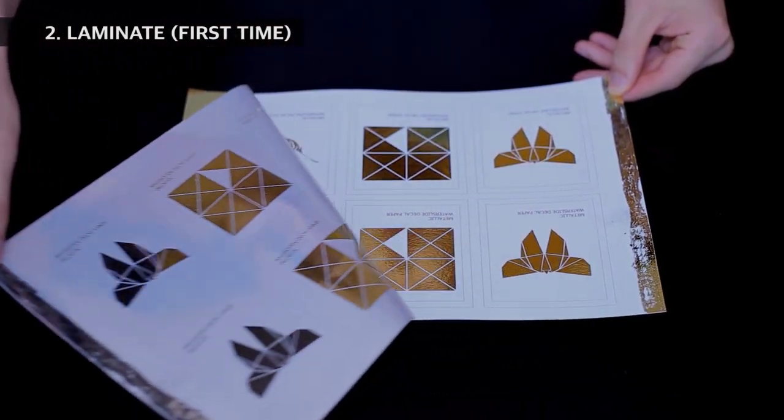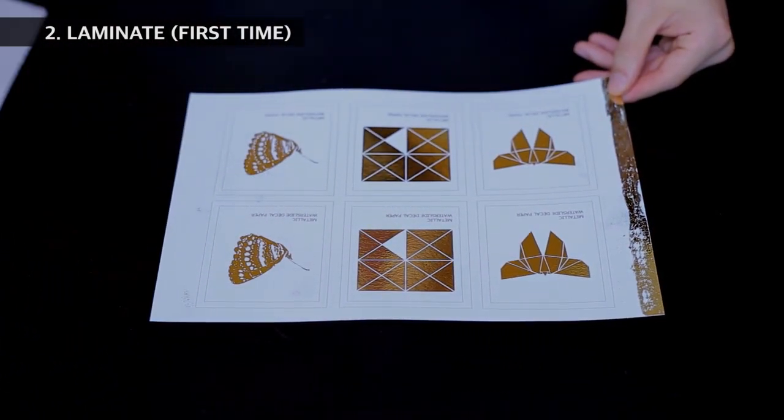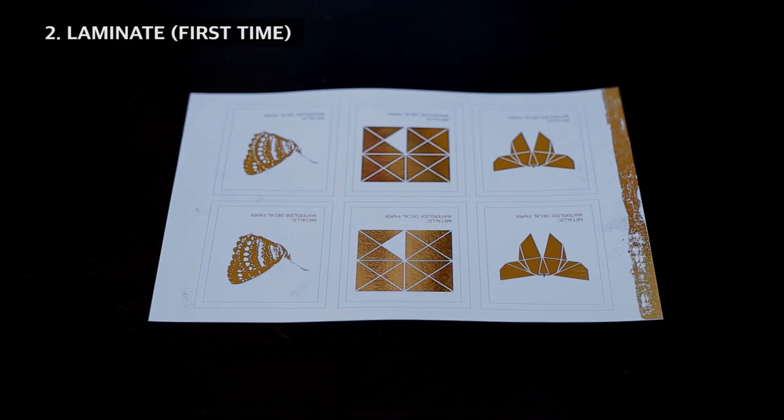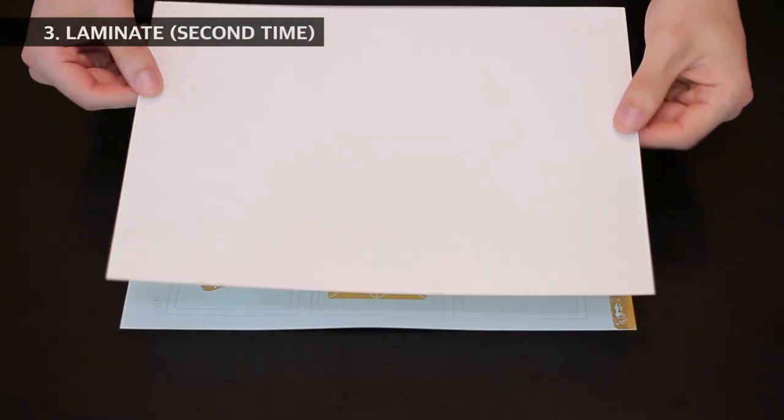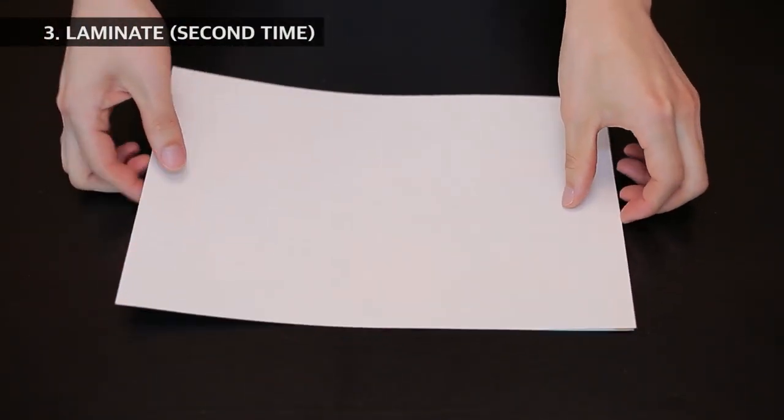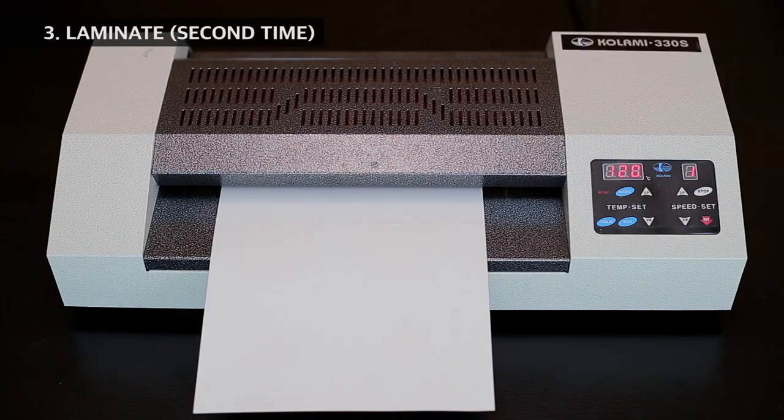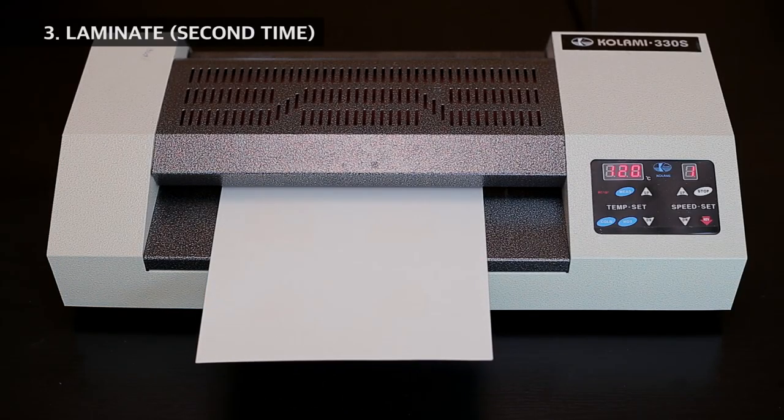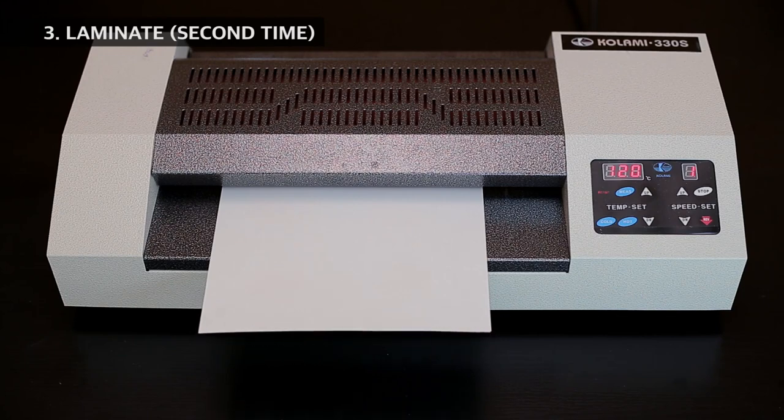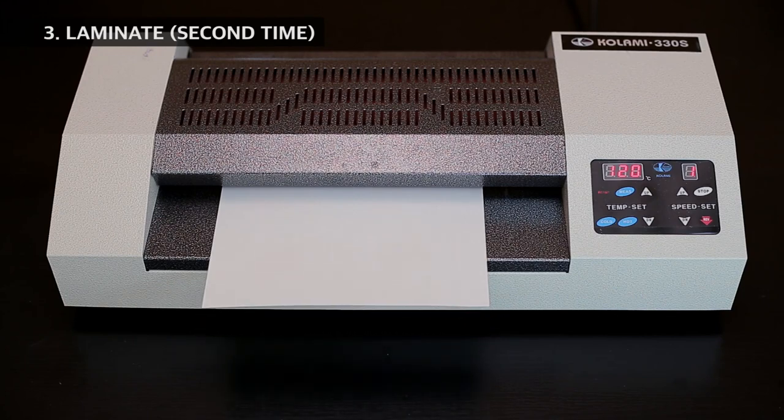Peel off the gold foil to reveal the gold design transferred to the blue decal. We have to laminate for the second time but we will be overlapping the blue decal with a standard white decal. The glossy side of the white decal with the coating and the image should face each other.